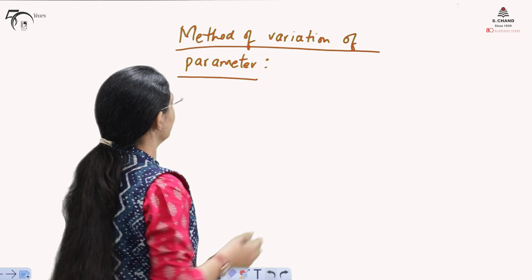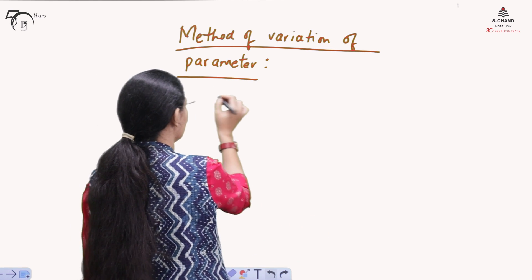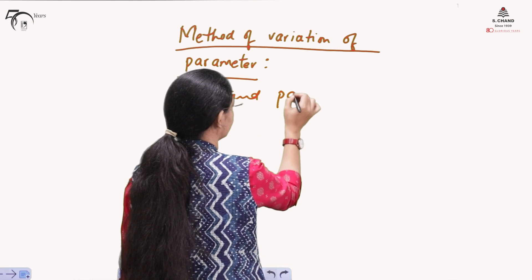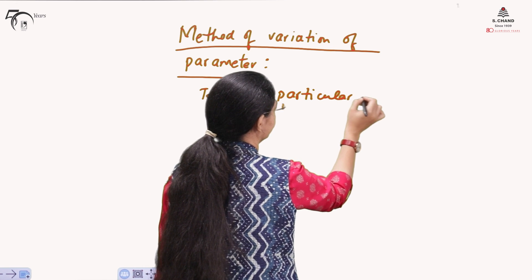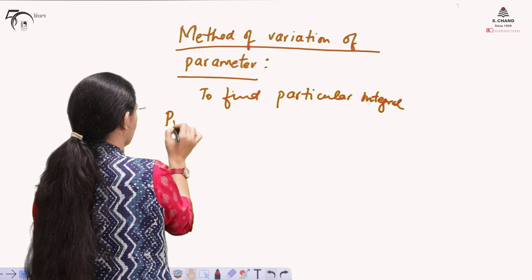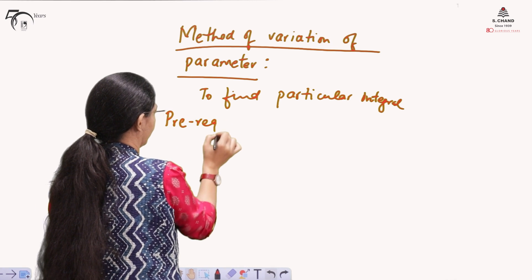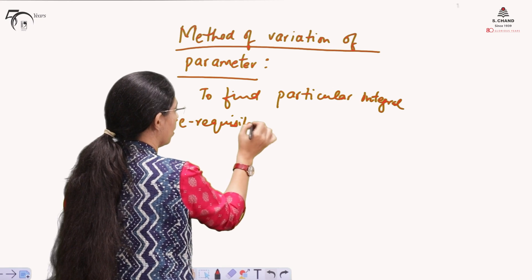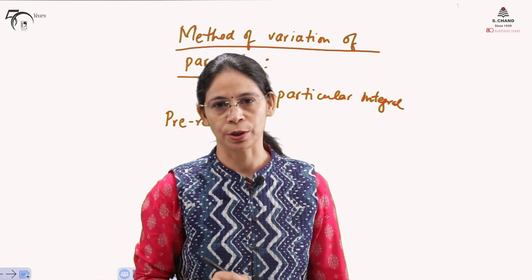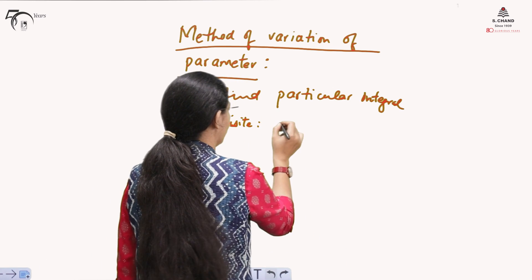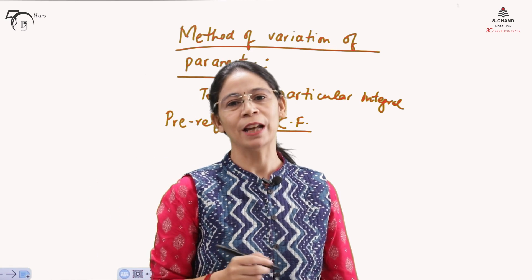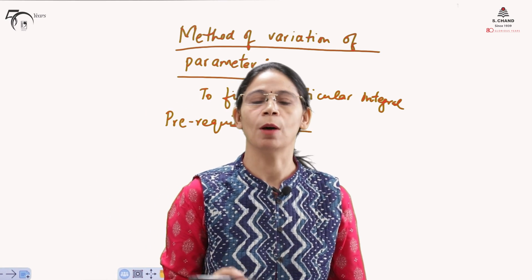For the method of variation of parameters, we need to understand two things: first, it is used to find the particular integral; and second, the prerequisite is that we must already have the complementary function for the linear differential equation. In our previous videos, we have already discussed how to find the complementary function.